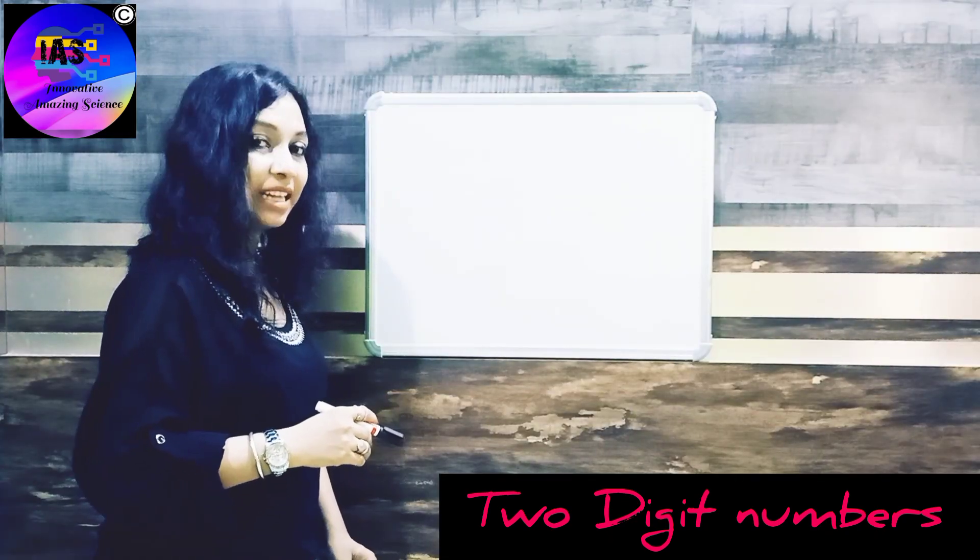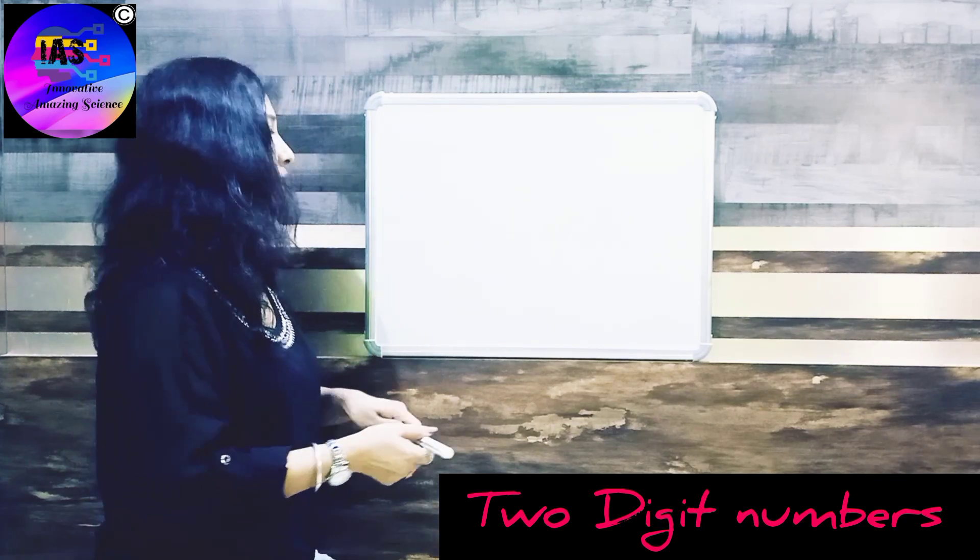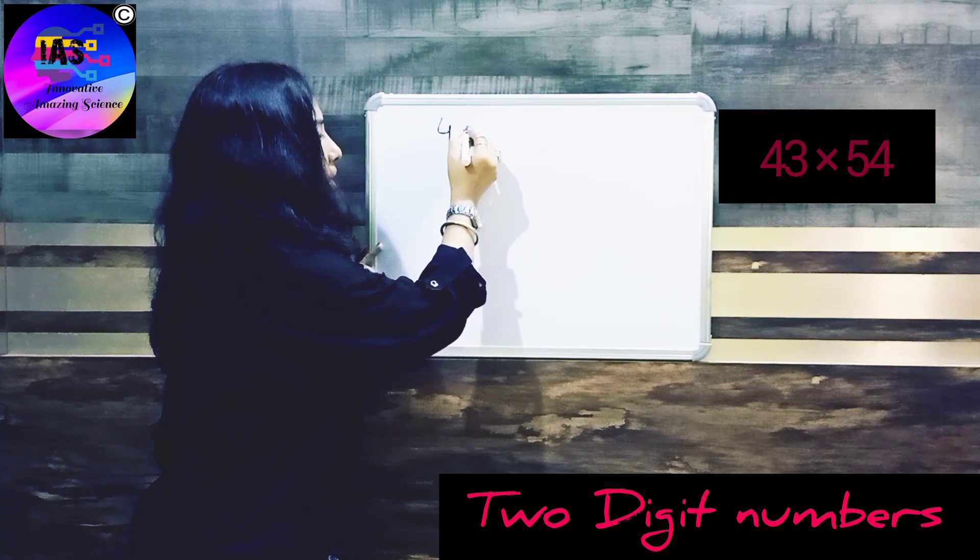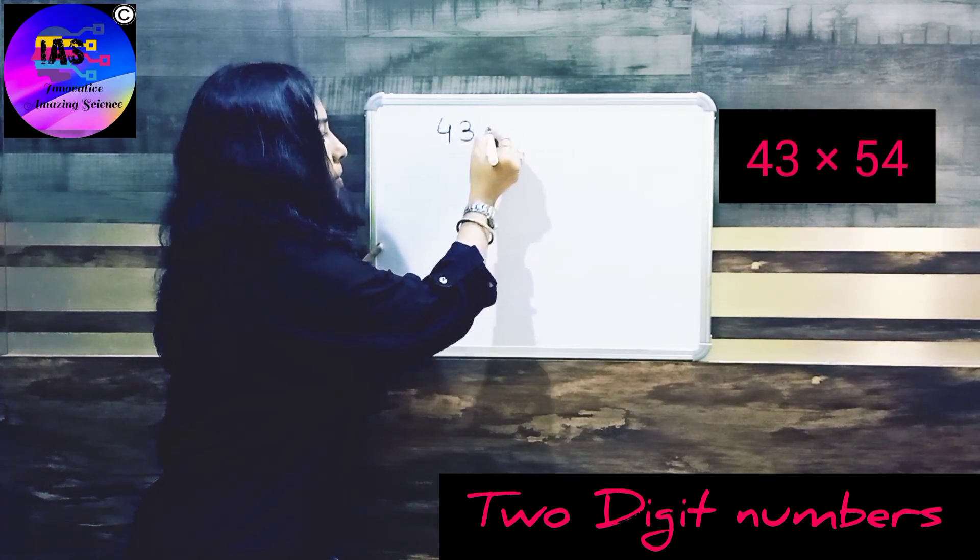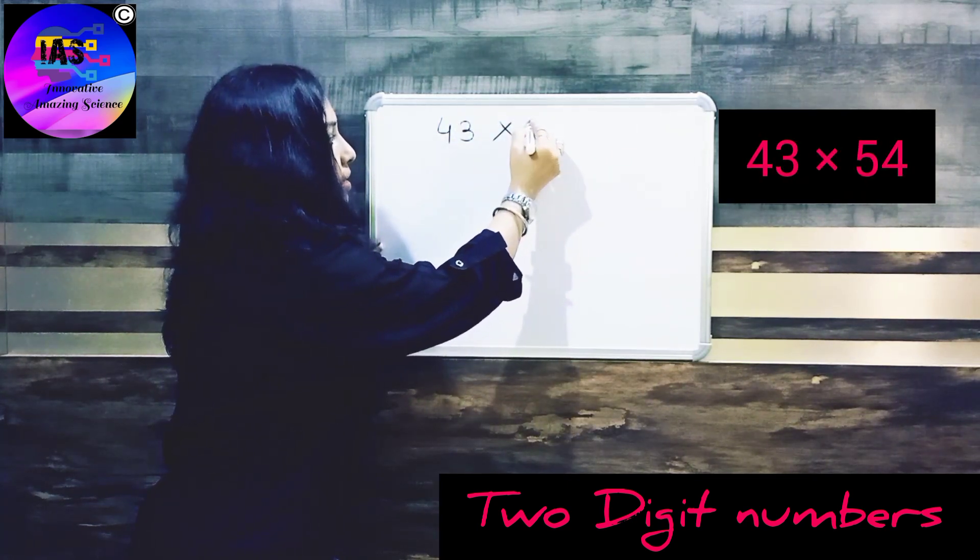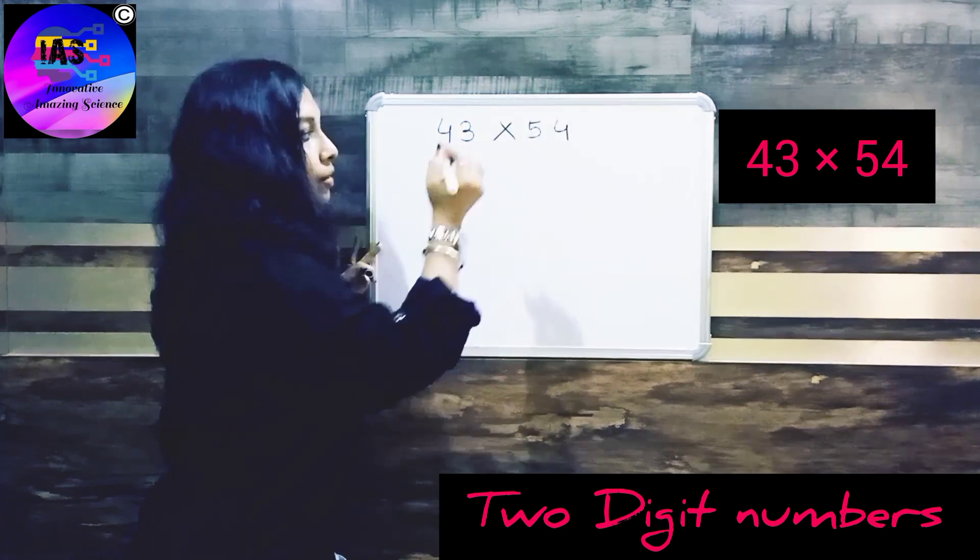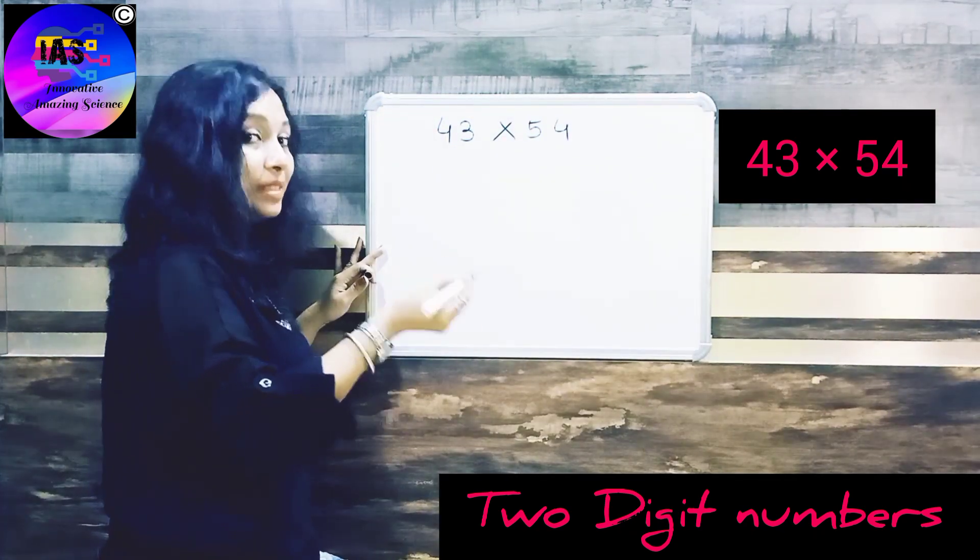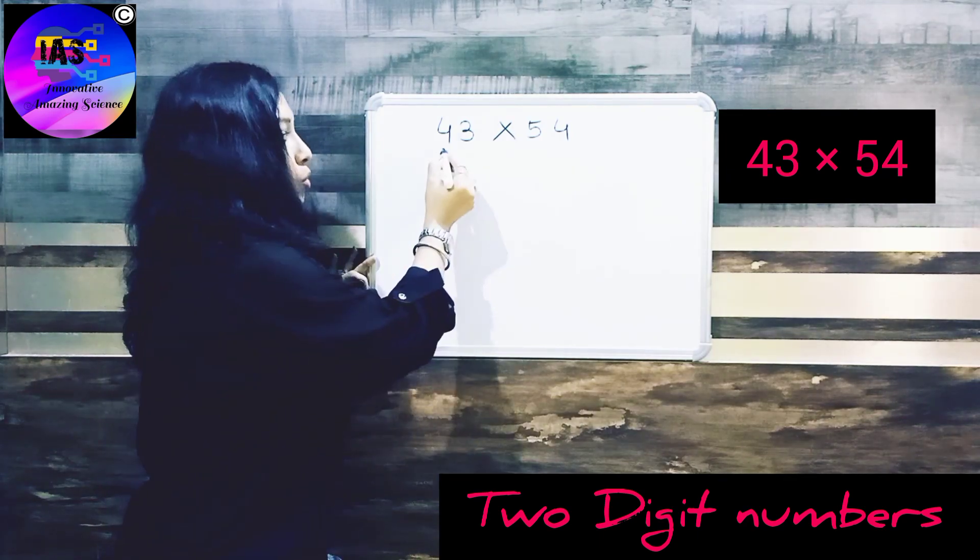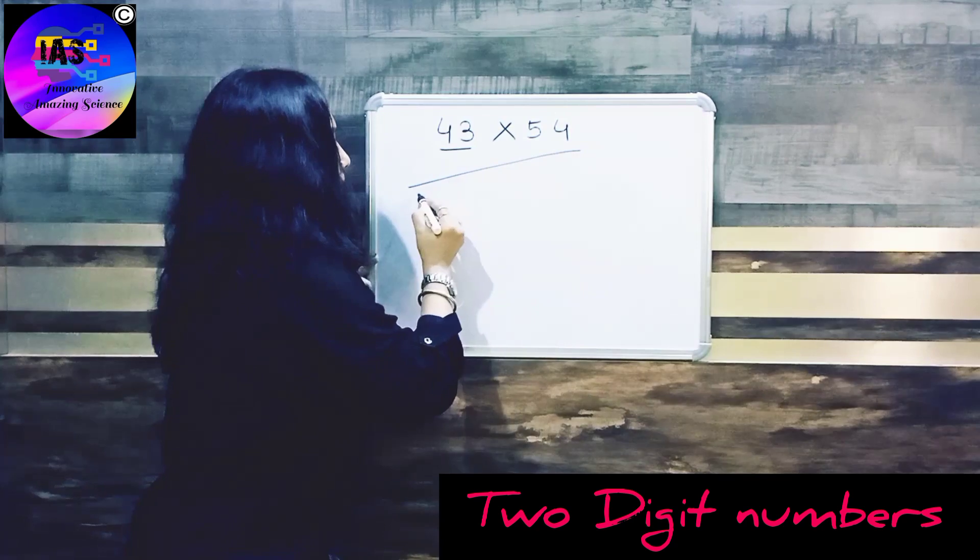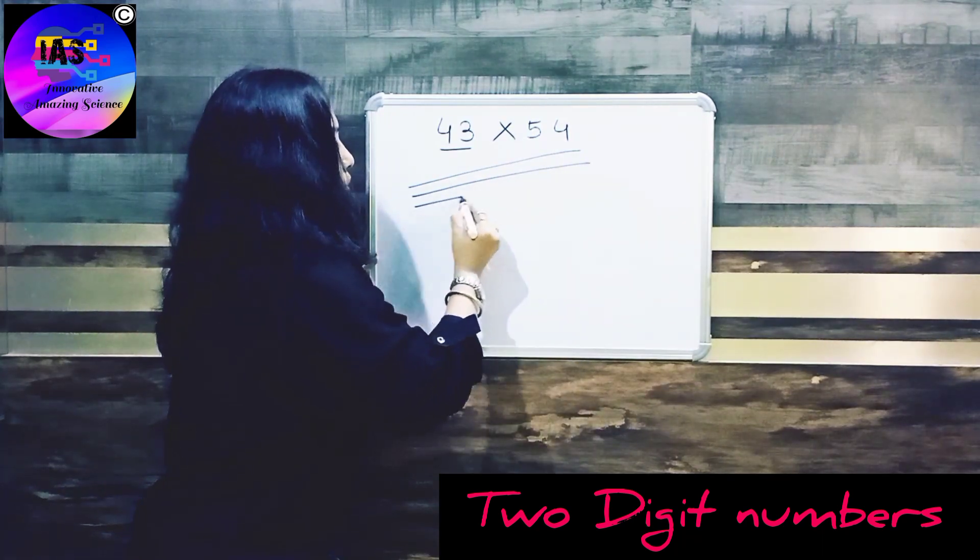So now let's take another number, a difficult one. So here I go. I'll take 43 and 54. So I've taken a little bit difficult number. So we'll concentrate on 43: one, two, three, four. And the next number is 3: one, two, three.